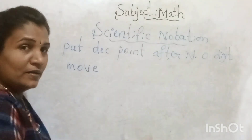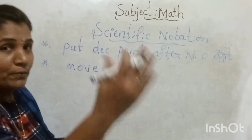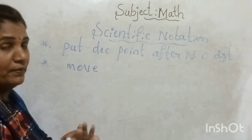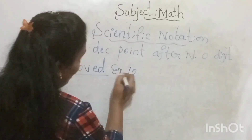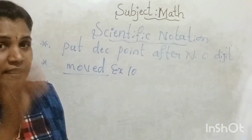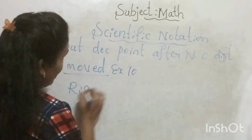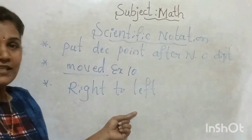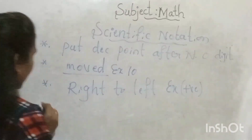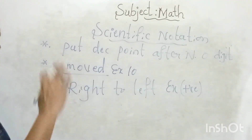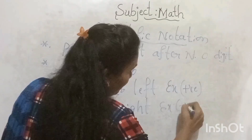The second point: we need to move the decimal point to the right or left depending on the number. How many positions the decimal point moves — that many digits it skips — will represent the exponent of 10, meaning the power. The third rule: if the decimal point moves from right to left, then the exponent will be positive.